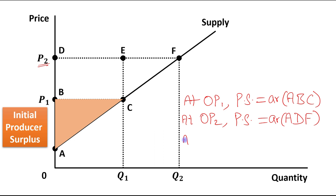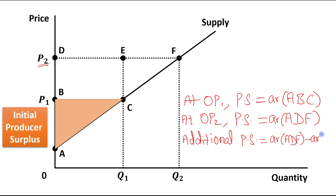And if we calculate the additional producer surplus, additional producer surplus will be equal to area A, D, F minus area A, B, C — so we can write it as area B, C, F, D. This will be the additional producer surplus.